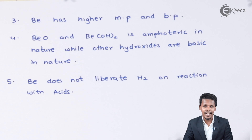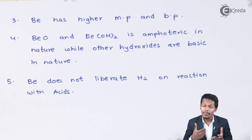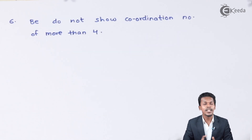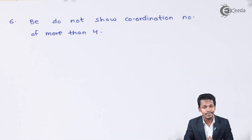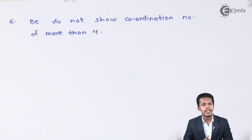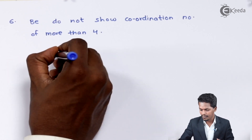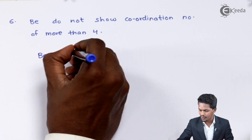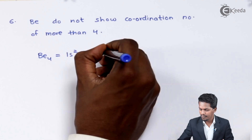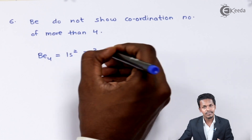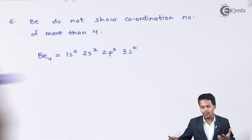There are also further points that make up the anomalous properties of beryllium. One different property is that beryllium does not form coordination compounds. The reason is related to its electronic configuration. Beryllium has an atomic number of 4, so its configuration is 1s², 2s², 2p⁰ — and from there 3s⁰ and so on.